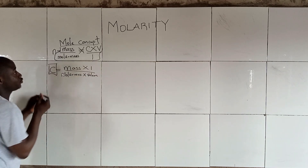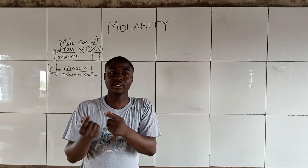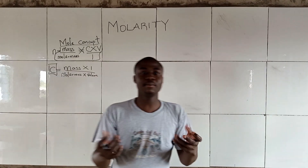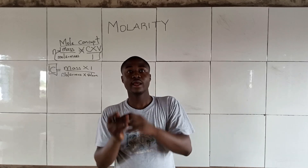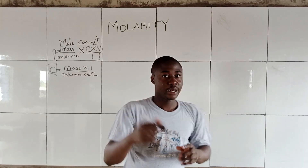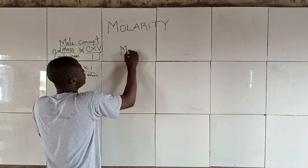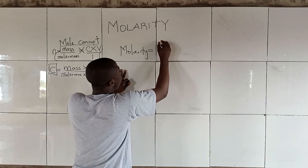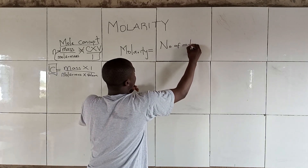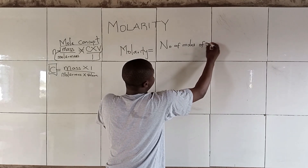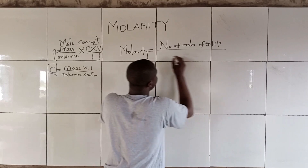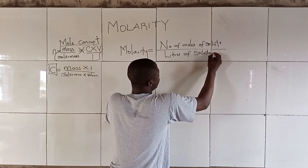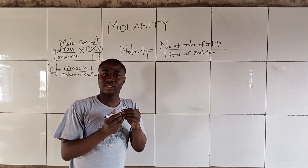This is the concentration formula. Recall I said Molarity is the same as concentration. Molarity is simply the number of moles of solute over liters of solution — that is, volume of solution in liters or dm³.